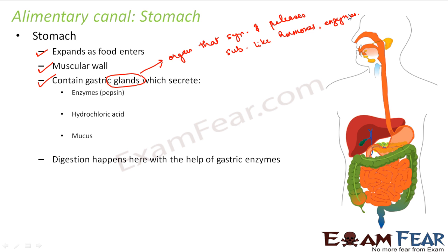For example, the mammary gland in females produces milk during the lactation period. There are many different types of glands which produce hormones or enzymes, either into the blood or into the body cavity. The stomach also has special glands known as gastric glands, and these glands produce an enzyme known as pepsin.